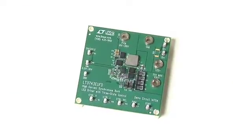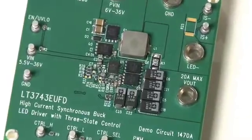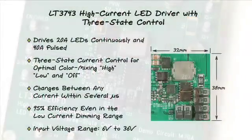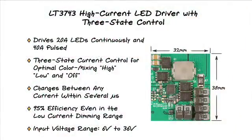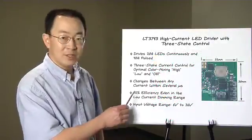Linear Technology's LT3743 differentiates itself from competitors on several fronts. It drives 20 amps continuously and up to 40 amps pulsed with super fast several microsecond rise time and fall time between any two current levels. The LT3743 does all this at 95% efficiency.